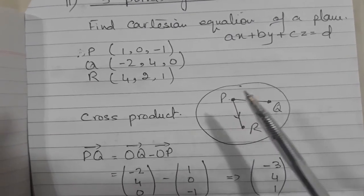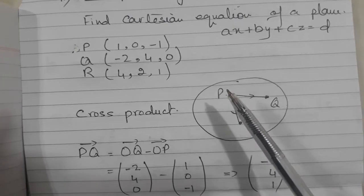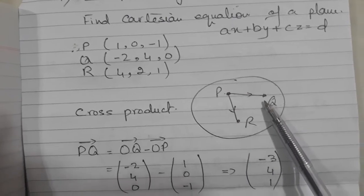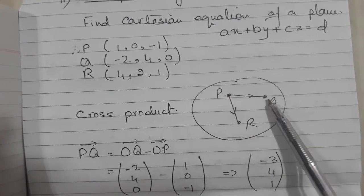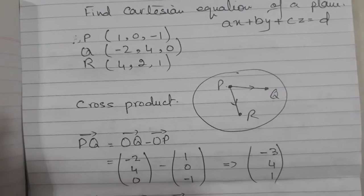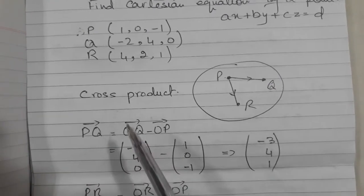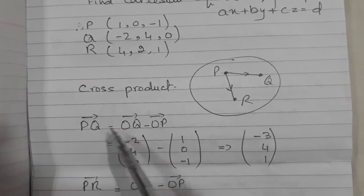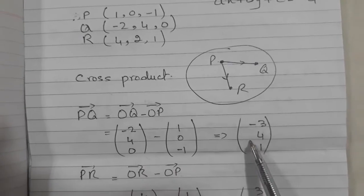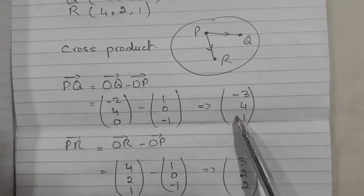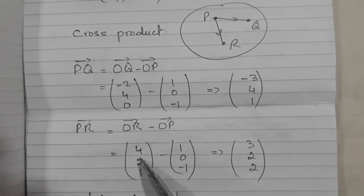So let's see how to apply cross product. Before applying cross product, we need to know the vector PR and PQ. I am taking PR and PQ. You can take QR if you like. So PQ is equal to OQ minus OP. I am not going into detail. We have seen it earlier. How to find it out? Then I have found out PR.